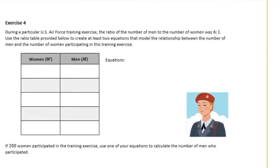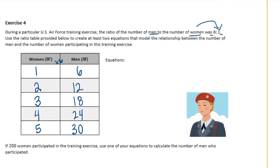Exercise 4. During a particular U.S. Air Force training exercise, the ratio of the number of men to women was 6 to 1. Use the ratio table to create at least two equations modeling the relationship. Men to women is 6 to 1, meaning women is 1, so 1 to 6 goes in the chart. If there were 2 women, that's 12 men. We're multiplying by 6 — so 3 times 6 is 18, 4 times 6 is 24, 5 times 6 is 30. The equation: women times 6 equals men, or 6w equals men. The inverse: 1/6 of men equals women.